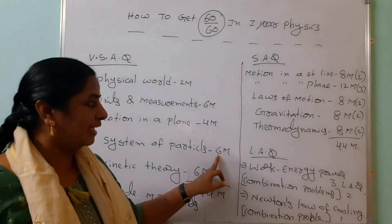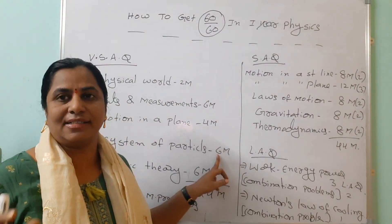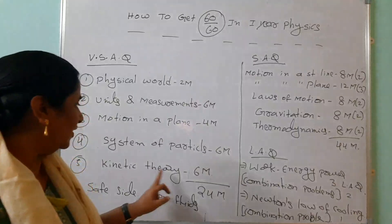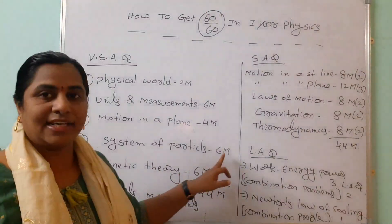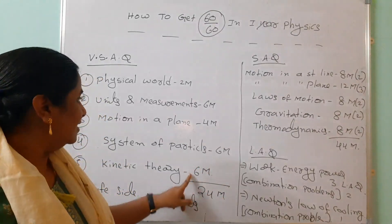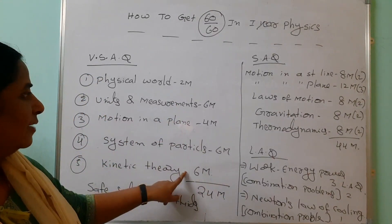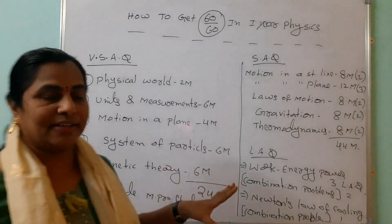System of particles - they are giving three VSAQs, and kinetic theory - they are giving three VSAQs according to Telangana State new model paper. See, these three don't leave. Six, three - eighteen marks you are getting, but you should write ten, ten - twenty marks.